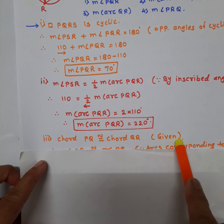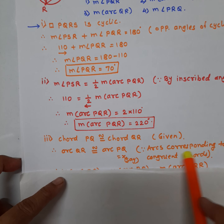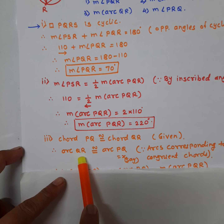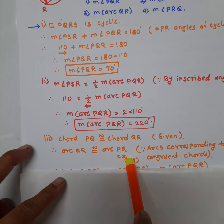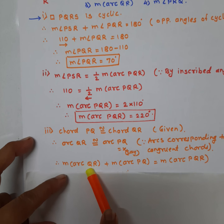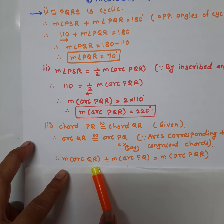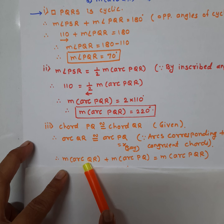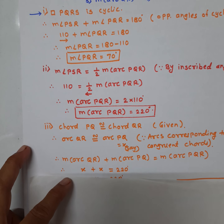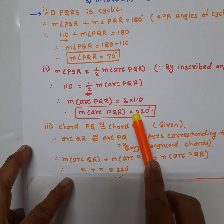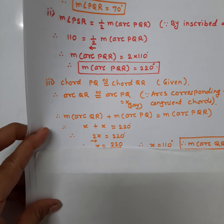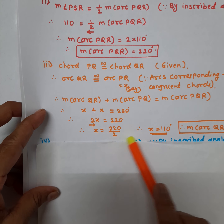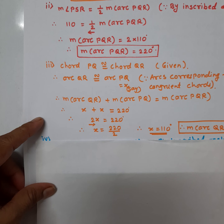Chord PQ is congruent to chord QR, which is given. Therefore, the arcs corresponding to the congruent chords are also congruent, and therefore arc QR is congruent to arc PQ. Let the measure of each be x degrees. By the arc addition postulate: arc QR plus arc PQ equals arc PQR, so x plus x equals 220 degrees. Transferring 2 to the right side gives x equals 220 divided by 2, that is 110 degrees. Therefore, the measure of arc QR is 110 degrees.